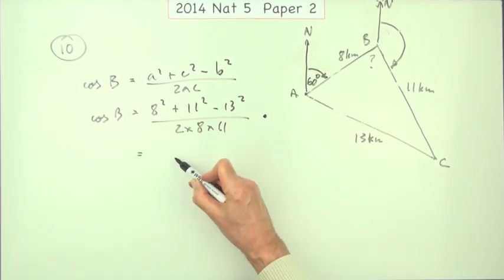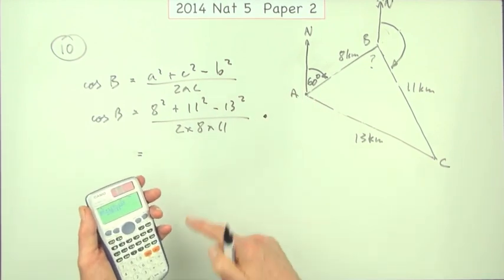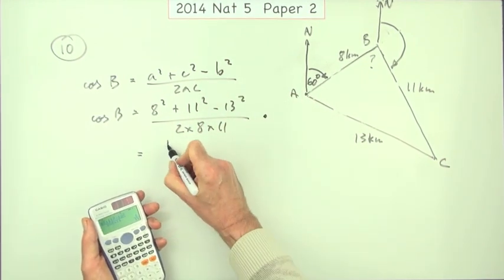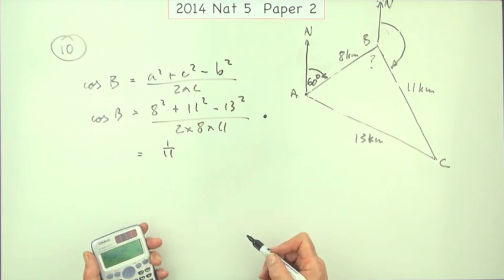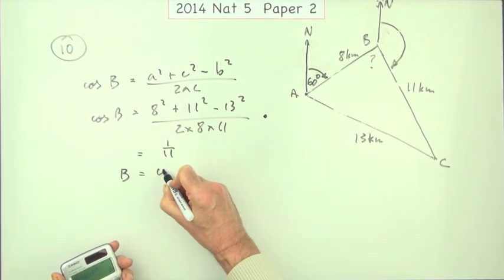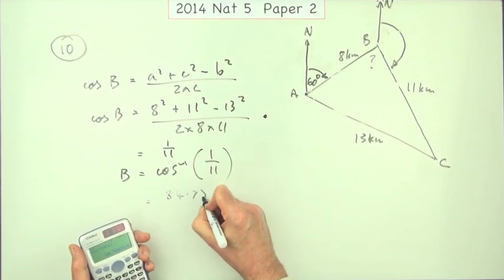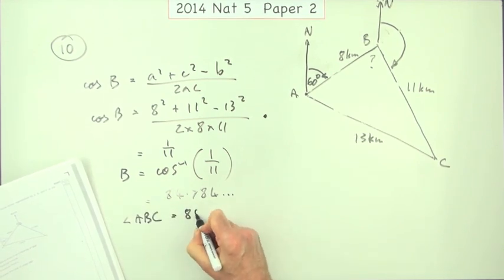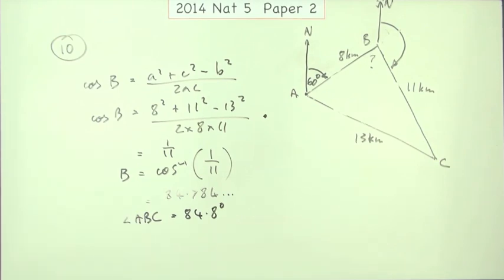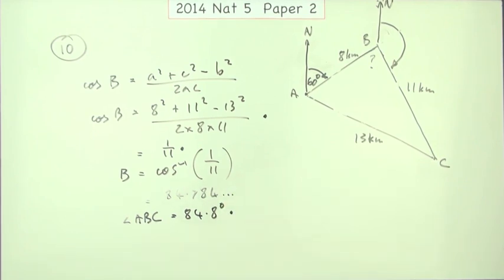You could get the angle straight away by going inverse cos of that whole expression — that should give you the second and third marks. If you're cautious, just evaluate the fraction first. It comes to one eleventh on these calculators. You don't need to convert it to a decimal since you're still going to do something else. So B = inverse cos of one eleventh, giving 84.784... So angle ABC is 84.8 degrees to one decimal place. The marking scheme allows 85, but always keep one decimal place. That's the second and third marks.